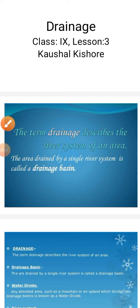Dear students of class 9th, today we will discuss a new chapter of geography. The name of the chapter is drainage. The term drainage is used to describe the river system of an area. Generally in the mountainous regions, several small streams flowing from different directions come together to form the main river, which ultimately drains into a large water body such as a lake, a sea, or an ocean.